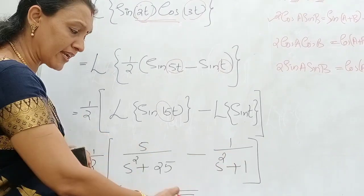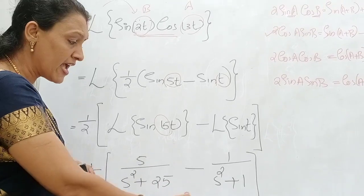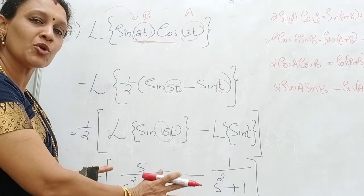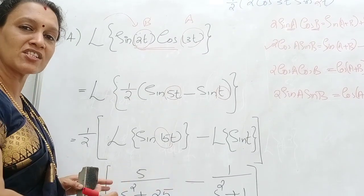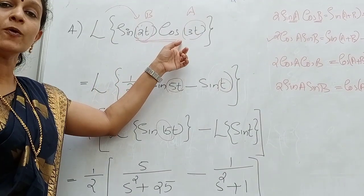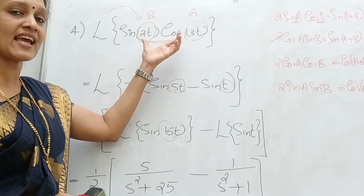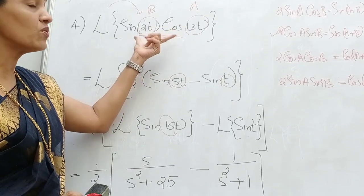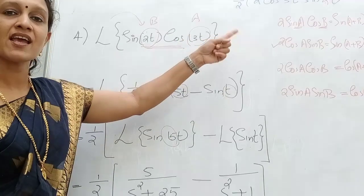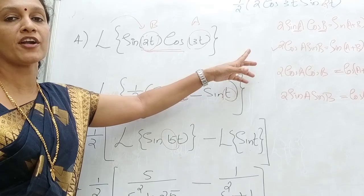You can further simplify this by taking S squared plus 25 into S squared plus 1 as the common denominator, or keep it as is — this is the final answer for L of sine 2T into cos 3T. Remember: whenever we have a product of these forms, use AB formulae to convert the product to the corresponding sum, then calculate the Laplace transforms.